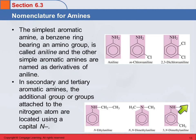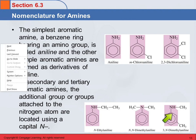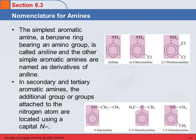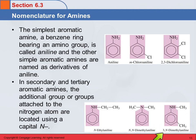This one has one methyl group on the nitrogen and a methyl group elsewhere on the ring. Carbon number one is where the nitrogen is attached. Counting this way, the ring methyl is at position 3: 3-methyl-aniline. And we have a methyl group on the N, so: 3,N-dimethyl-aniline.